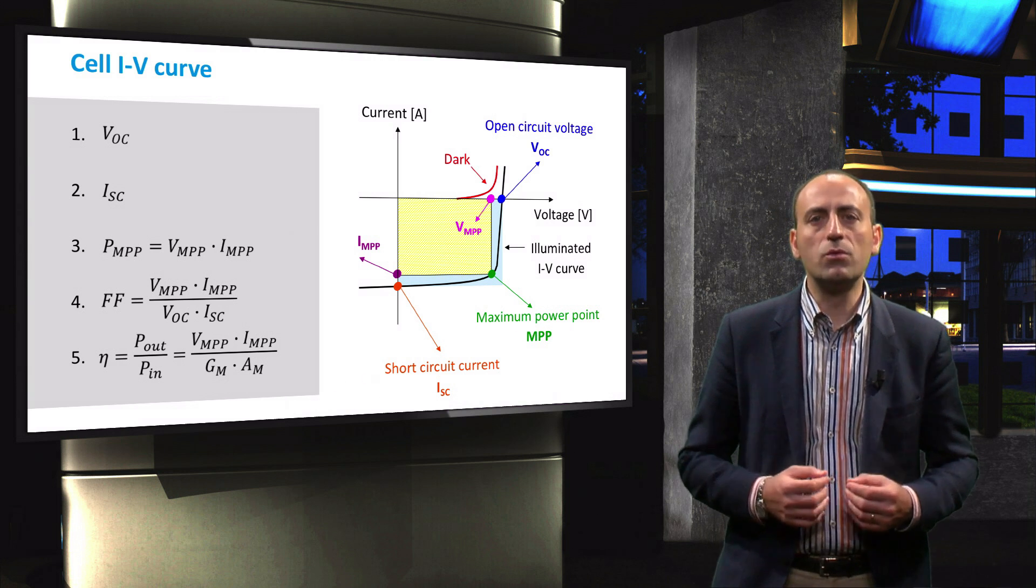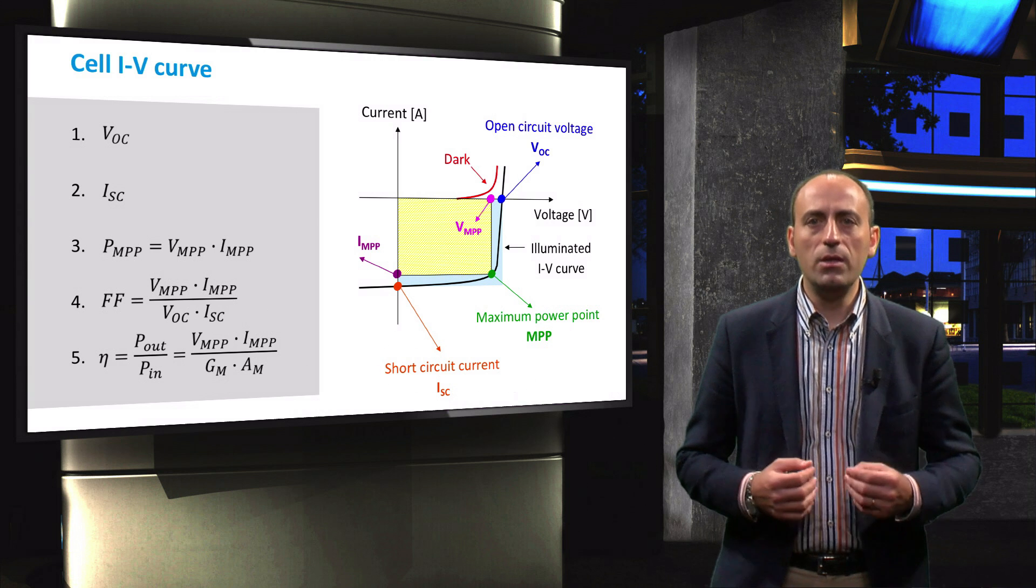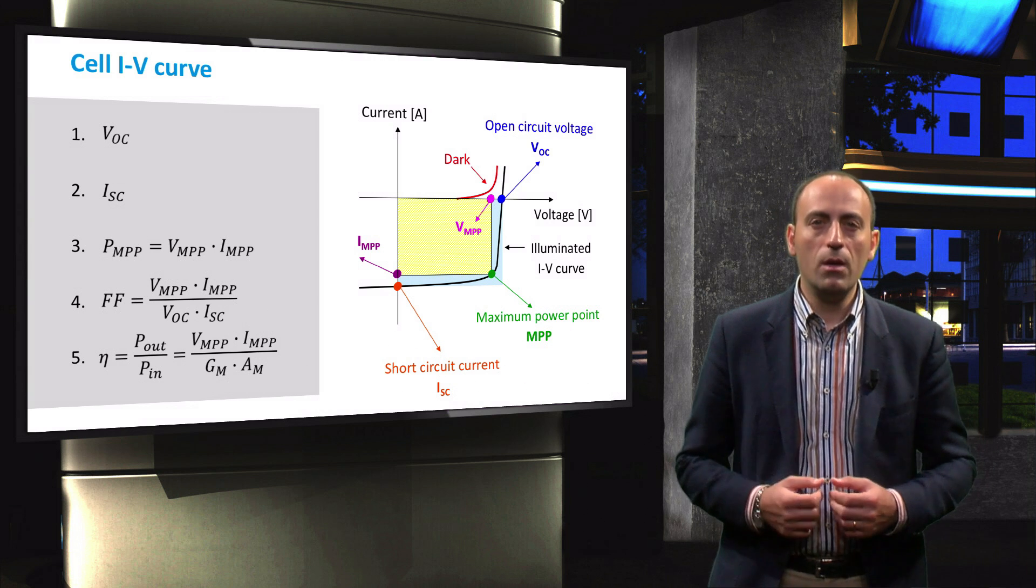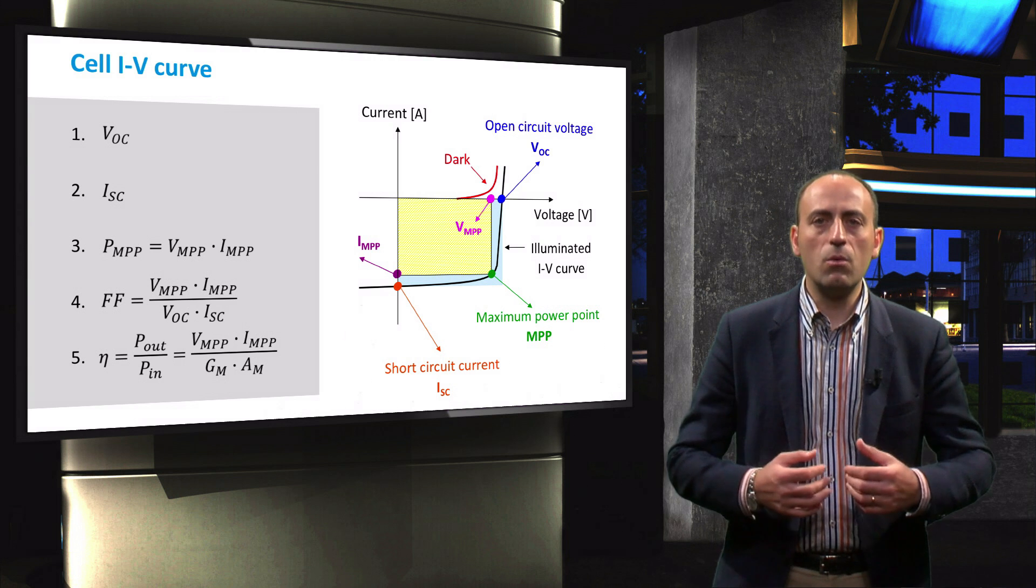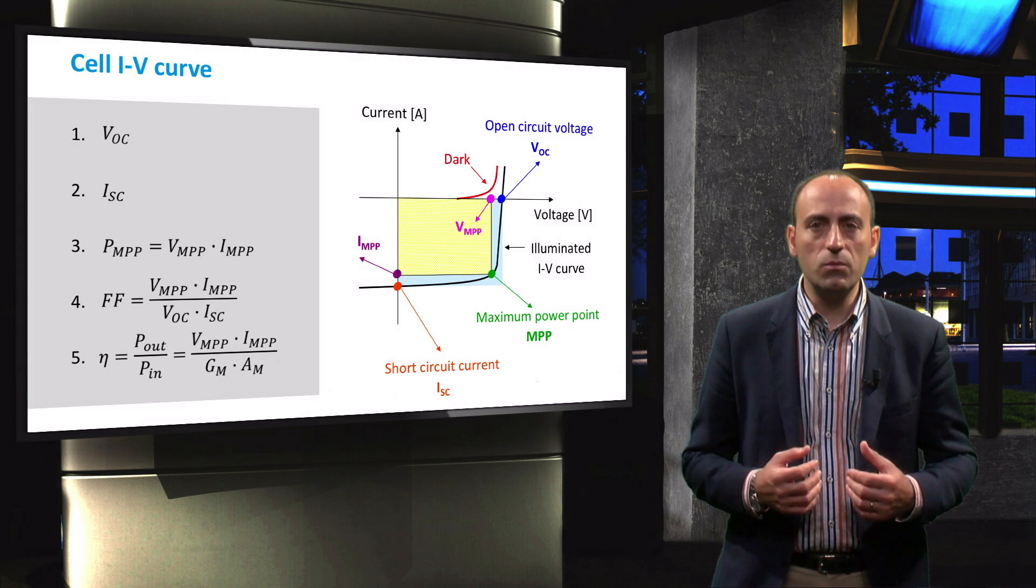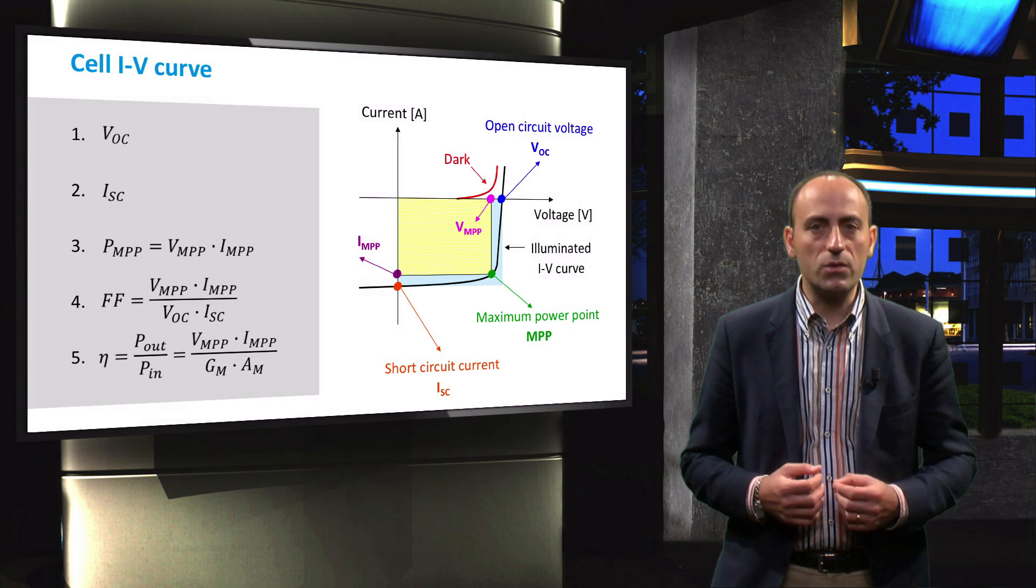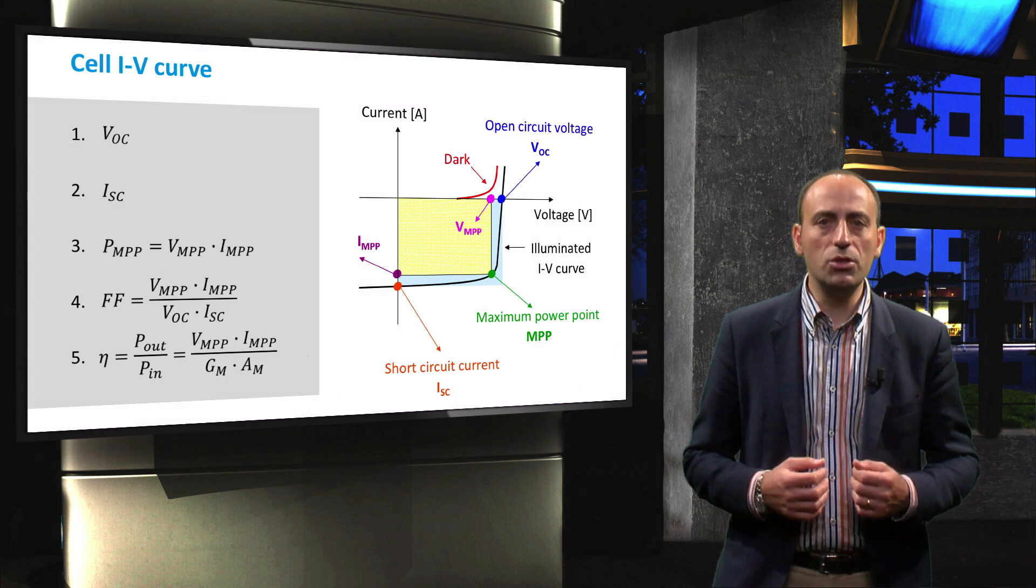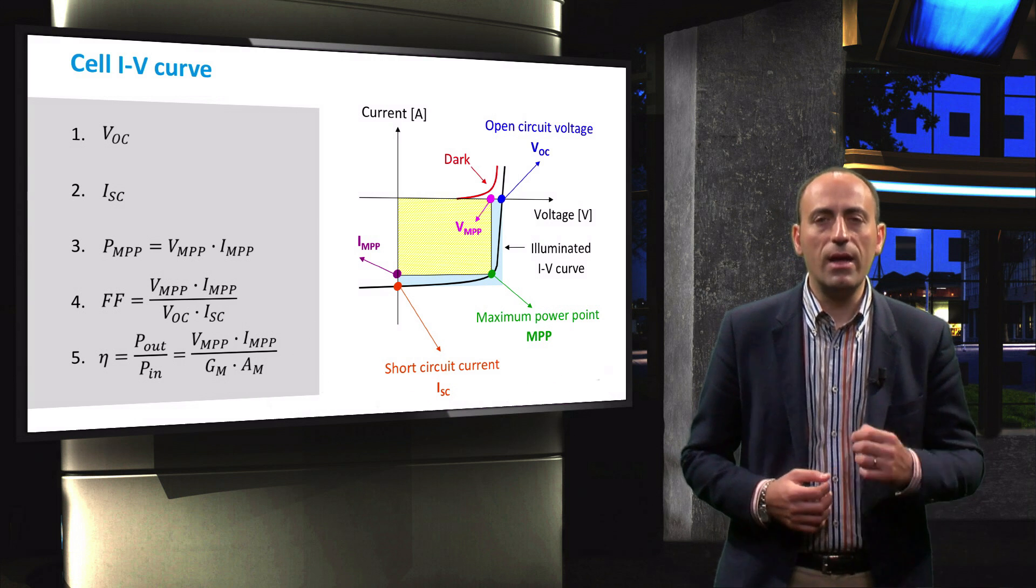In practice, this means that the efficiency is equal to the maximum power output divided by the incident power. The incident power, in this case, is equal to the product of the irradiance, which is generally equal to 1000 W per square meter according to the standard test conditions, and the cell area, AM.